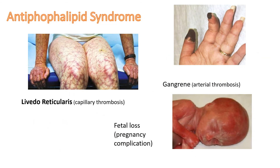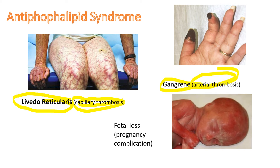Clinical signs of antiphospholipid syndrome include livedo reticularis, which is not particularly specific to antiphospholipid syndrome but can be seen frequently. It is due to capillary thrombosis, gangrene from arterial thrombosis, and early fetal loss.